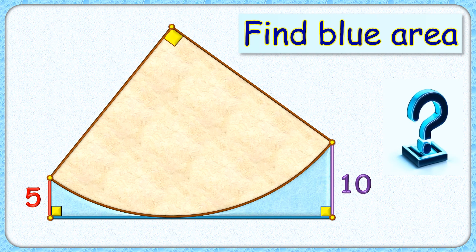Welcome everyone to this interesting question where given to us is a quadrant with this blue line segment as tangent to the quadrant. The distance of one vertex of the quadrant from the tangent is 5 centimeters and the distance of the other vertex from the tangent is 10 centimeters. With this limited data we have to find the area of this blue region.